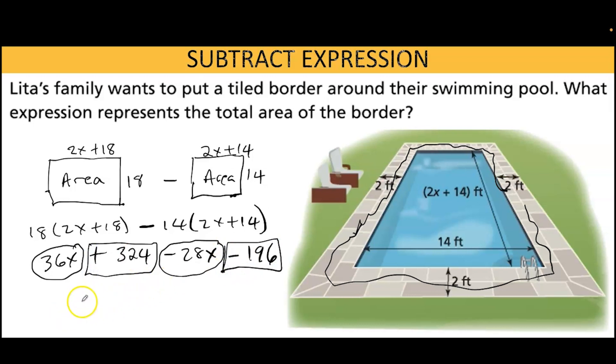Now I can use the commutative property to reorder my terms: 36x minus 28x plus 324 minus 196. When I combine these terms I get 8x plus 128. So this would be our answer for the area of the border around this pool. Thank you for watching.